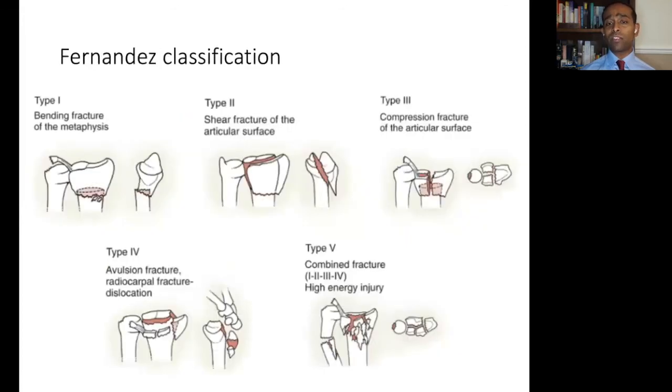Despite what I said about classifications previously, there is a classification devised by Diego Fernandez, which is based upon the mechanism of injury that is useful, as it gives an indication of the forces required for reduction and associated injuries. Therefore, it's a more practically-minded classification that guides management. As you can see, the classification encompasses everything from simple Colles-type fractures through to fracture dislocations and high-energy comminuted injuries.